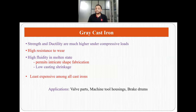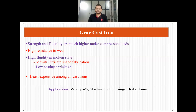This brittleness in tension is not the scenario under compression. Under compressive loads, gray cast irons show high strength and high ductility. They also show high resistance to wear and high fluidity in the molten state. This high fluidity helps them to be fabricated into complex or intricate shapes, and the casting shrinkage is very low. All these factors lead to low expense, making gray cast iron products the least expensive among all cast irons. Applications include valve parts, machine tool housings, and brake drums.